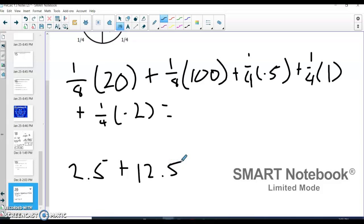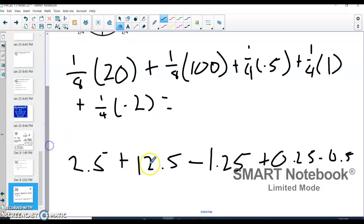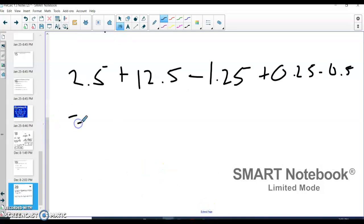Then I have 1/4 times negative 5, so this is really like going to be subtraction here because this is going to be a negative. So that's minus 1.25 plus 1/4 times 1, which is plus 0.25, plus the last one, which is 1/4 times negative 2, so minus 0.5 because negative 2 times 1/4 is 0.5.